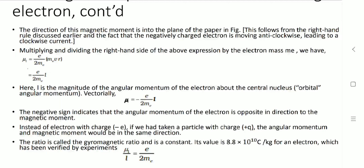The bold letter defines the vector quantity with its magnitude. The negative sign shows that the angular momentum of the electron is in the opposite direction of the magnetic moment. If we have a positive charge, then the magnetic momentum and angular momentum of the charge would both be in the same direction. Taking the ratio of magnetic momentum to angular momentum L, mu-L divided by L equals e upon 2 m_e, and its value is 8.8 times 10 to the 10 Coulombs per kilogram for an electron.